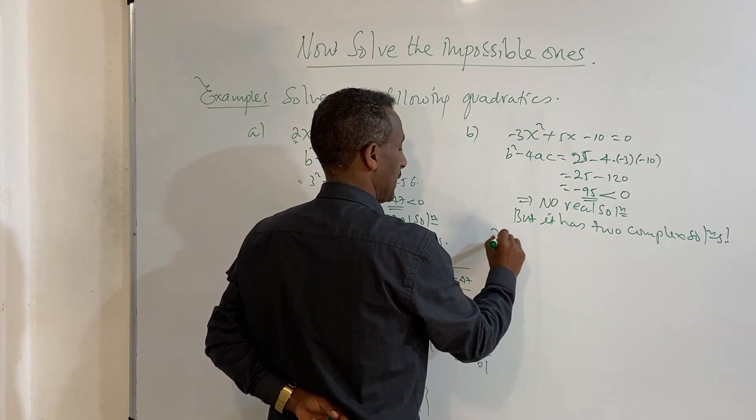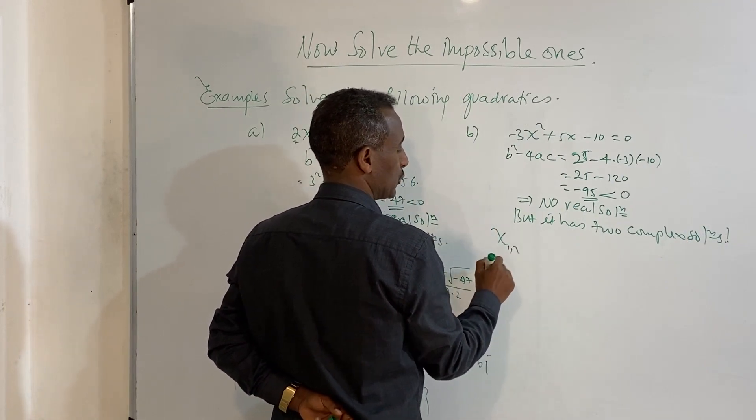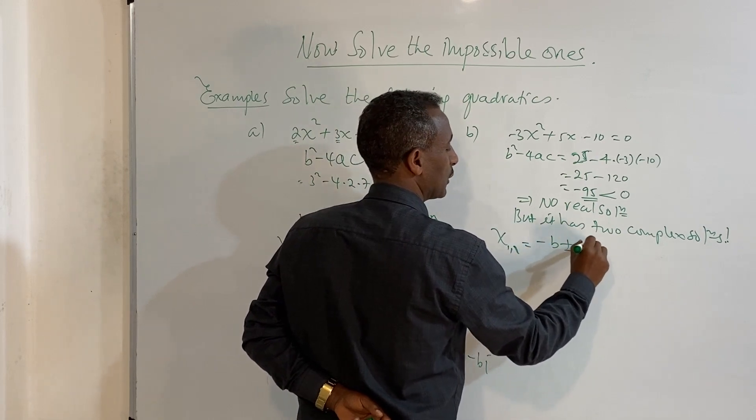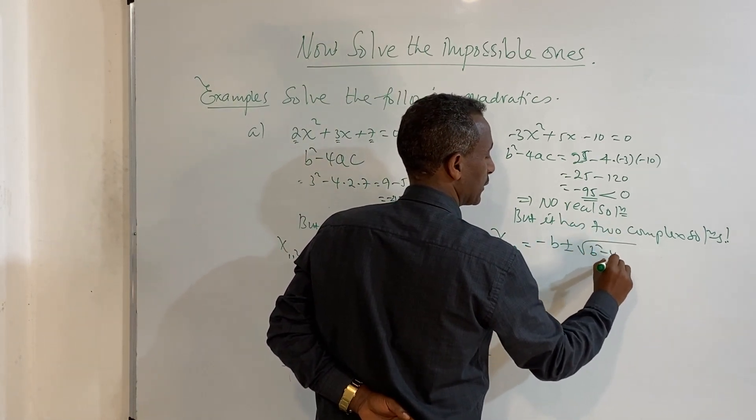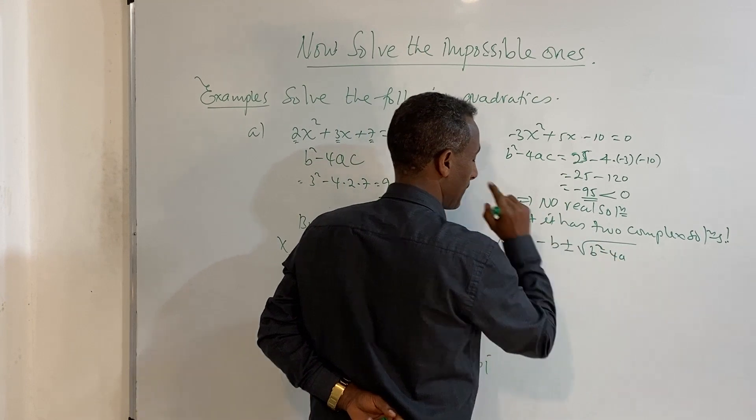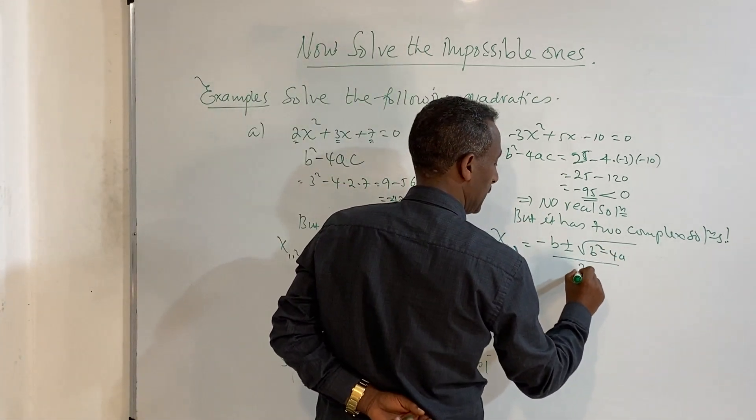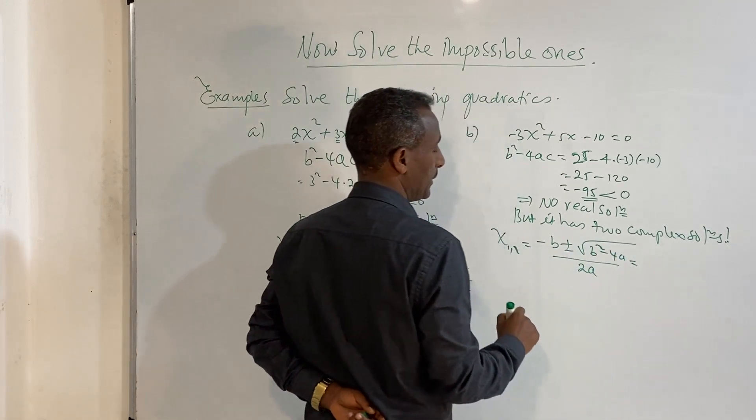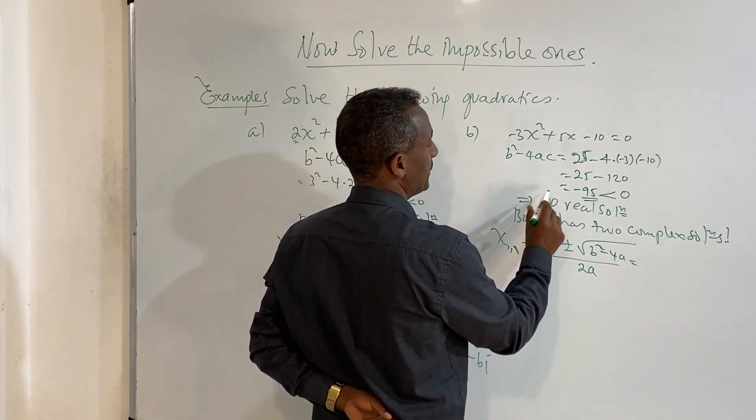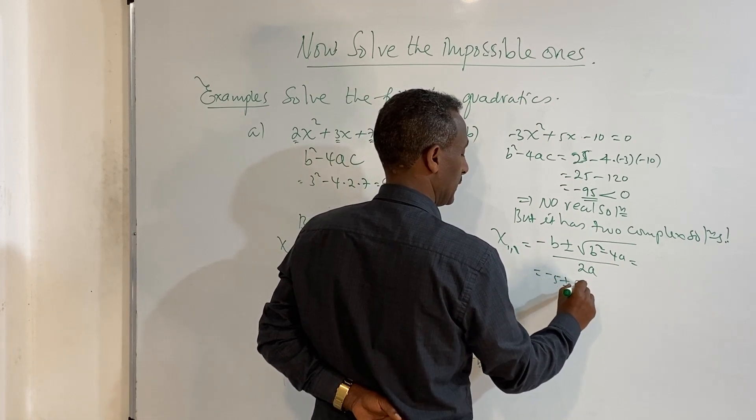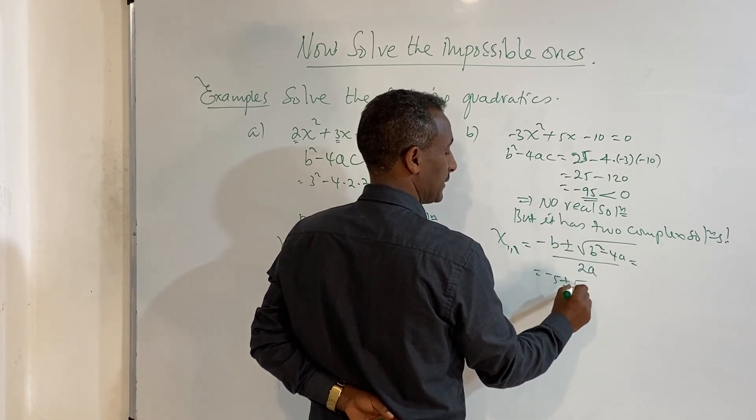What are they? x1 and x2, solution 1 and solution 2, is equal to minus b plus or minus square root of b squared minus 4ac over 2a.